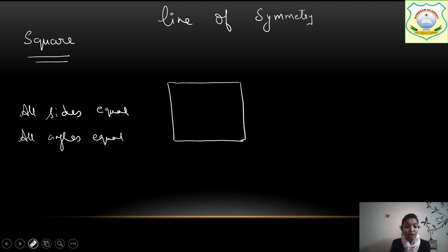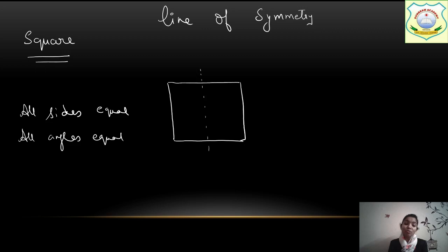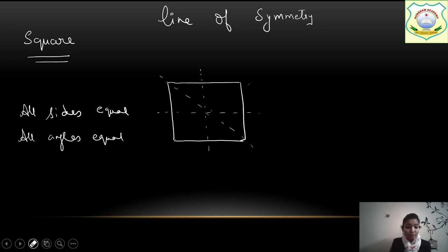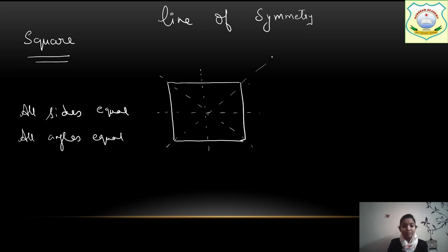Now we need to draw the line of symmetry. Take a scale in the middle and draw a dotted line like this. How many lines of symmetry will there be in a square? In a square there will be 4 lines of symmetry. Line 1, line 2, line 3, and line 4. Now I am showing you how it is 4, with the help of a sheet — I will take a paper and show you. So there are 4 lines of symmetry.